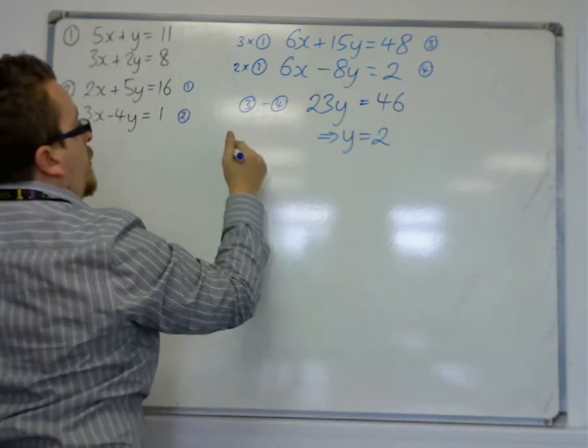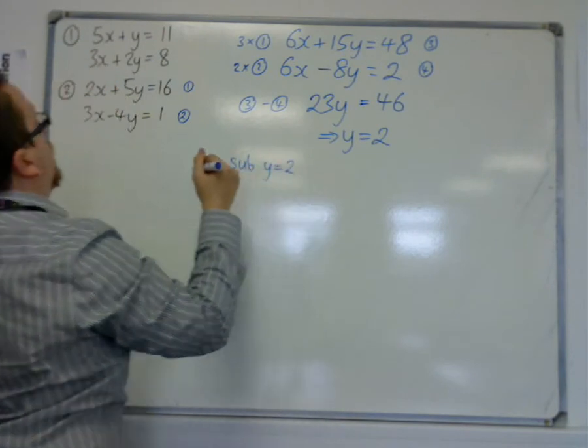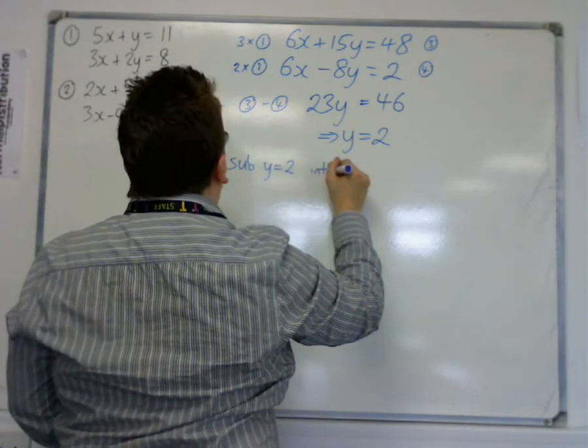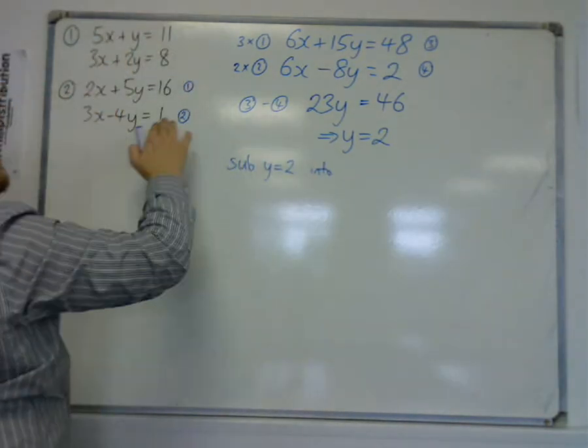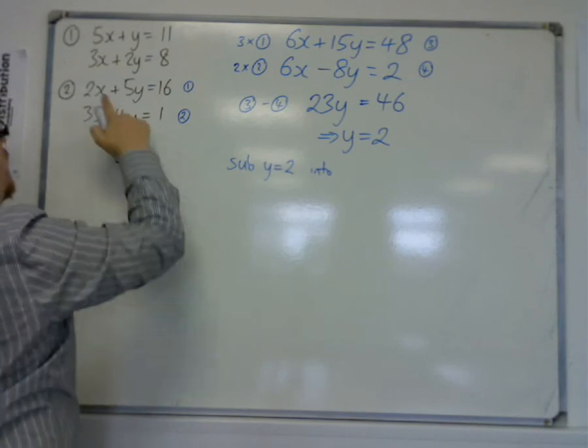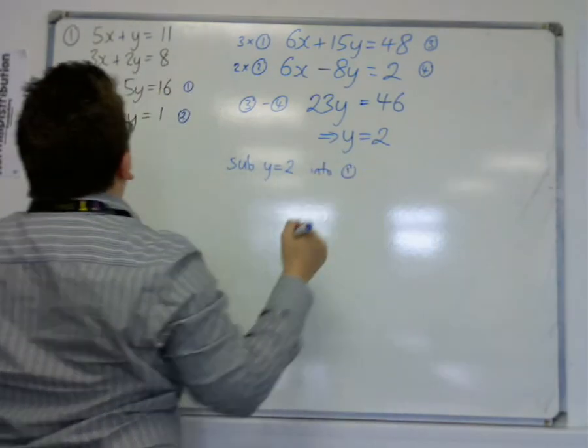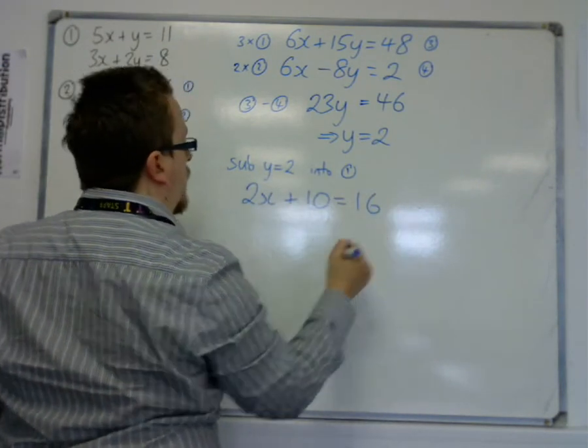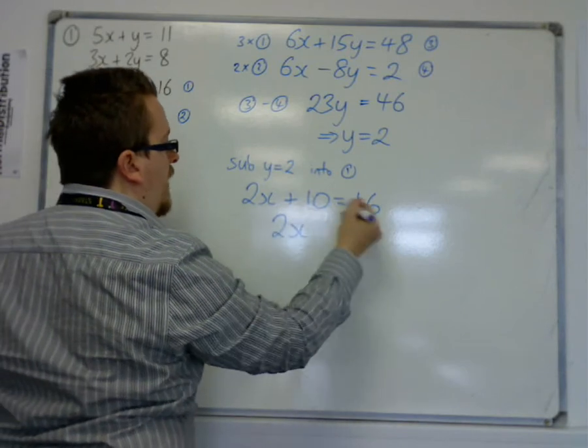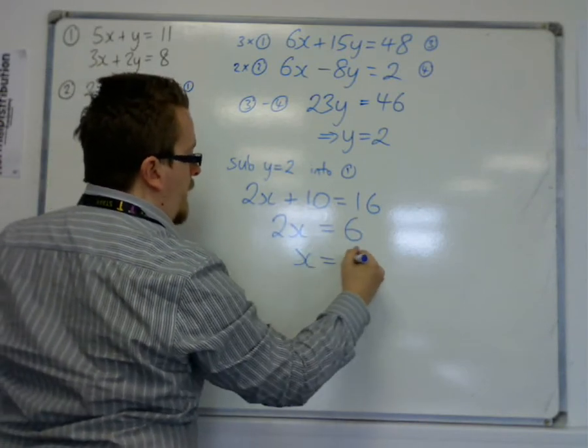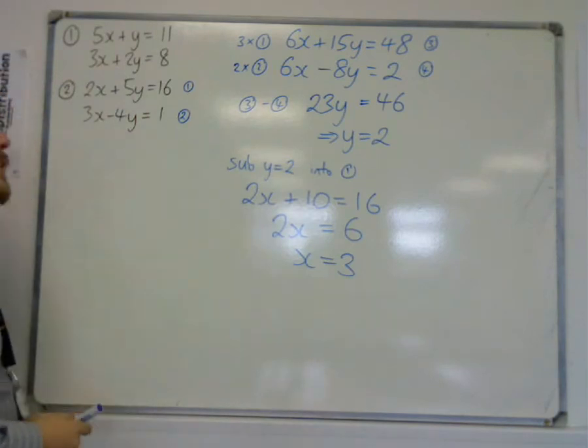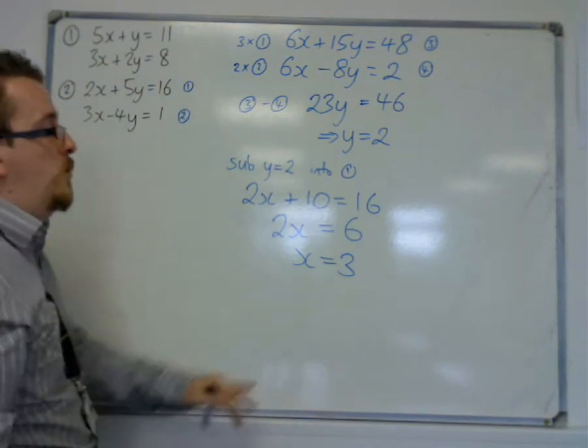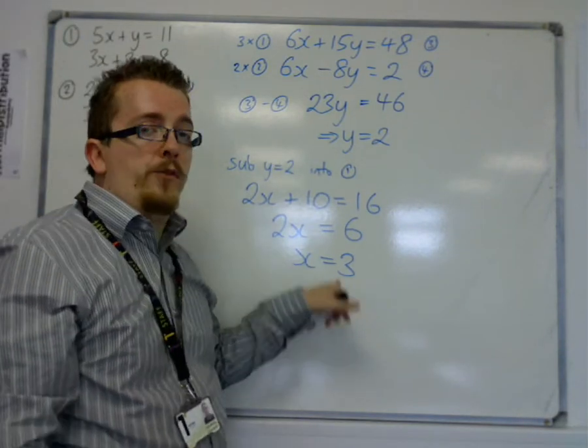And then I can sub y equals 2 back into one of the two equations. I'm going to do the first one. Sorry, I was circling that one but I meant one of these. Let's do number 1. So we get 2x plus 5 lots of 2 is 10, is 16. So 2x, take 10 from both sides, is 6. So x is 3. So the solutions are x is 3 and y is 2. So in other words, these two lines would intersect one another at the coordinates 3, 2.